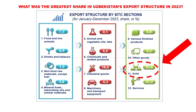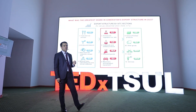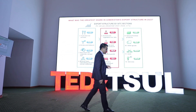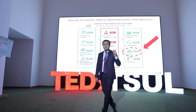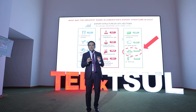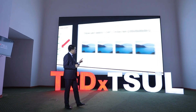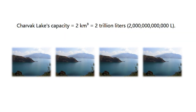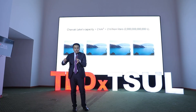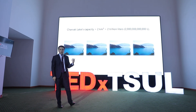Another question: do you know what holds the greatest share in Uzbekistan's export structure in 2023? Based on the first table, can you guess? Gold. Uzbekistan exported 25 metric tons of gold in 2023. According to my research, that equals 8.5 trillion liters of virtual water — equivalent to four Charvak reservoirs. It's like exporting, in the form of gold, four Charvak reservoirs. You heard it right.